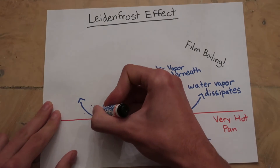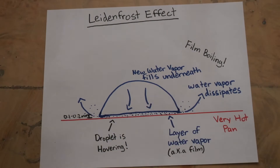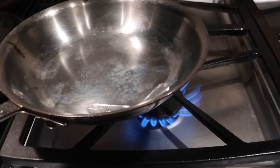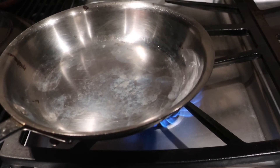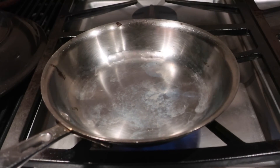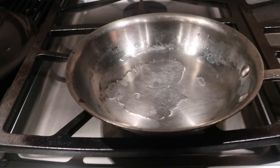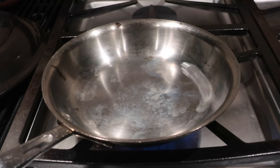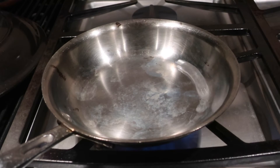The droplets are actually hovering. There is a space of about 0.1 to 0.2 millimeters where water vapor separates the water from the pan. This means there is almost no friction between the water and the pan. So if you give the pan a spin, the water will just keep spinning around and around. Usually the contact of the pan with the water creates resistance, but since the water is floating on a cushion of its own vapor, there isn't much slowing it down.